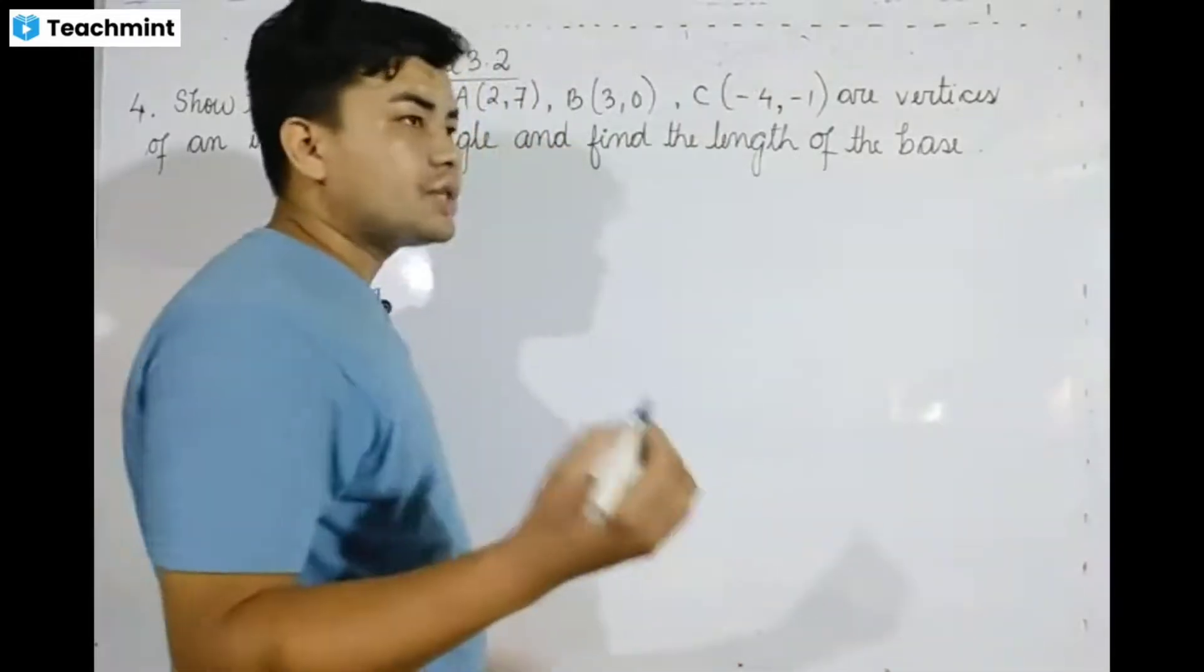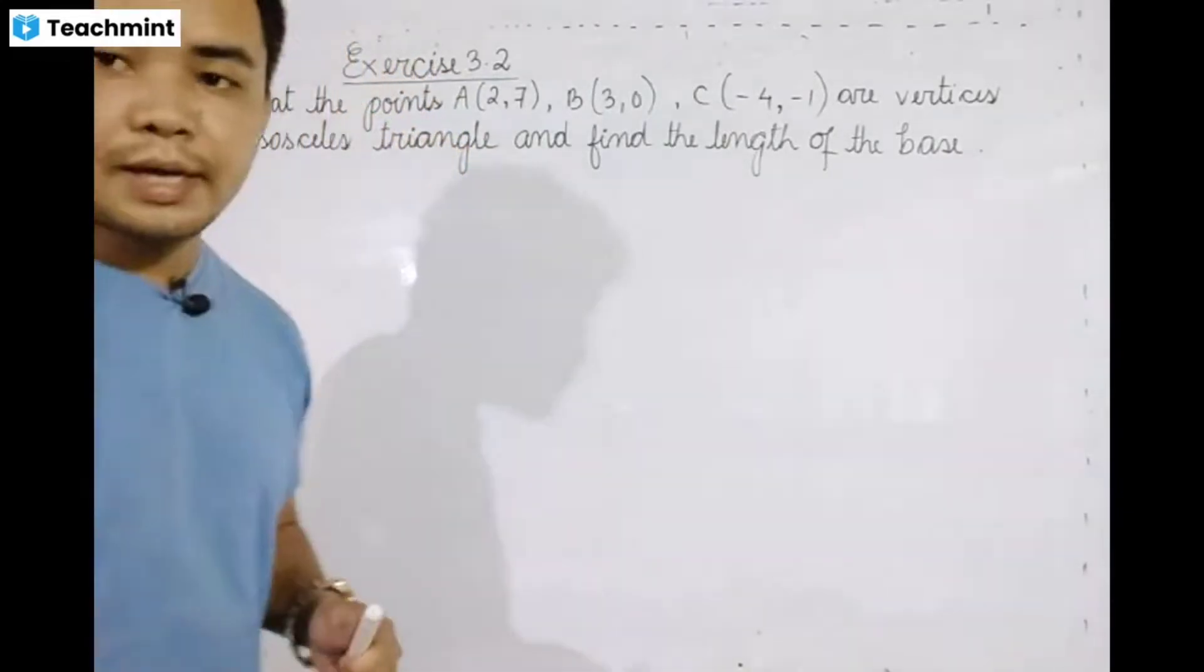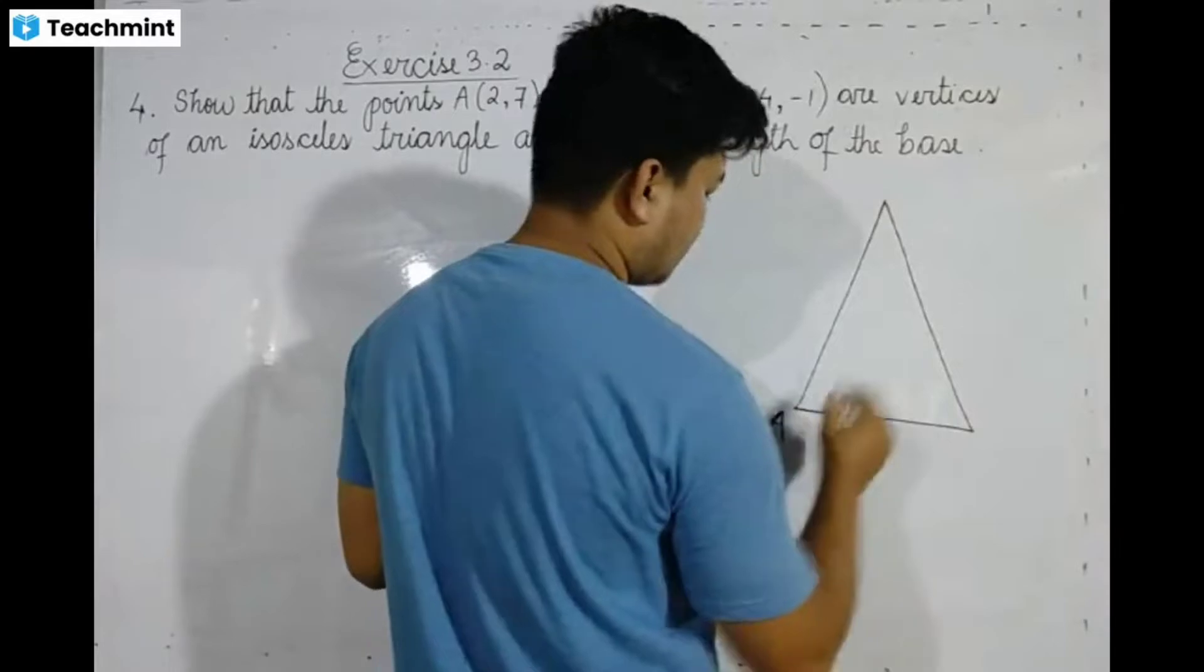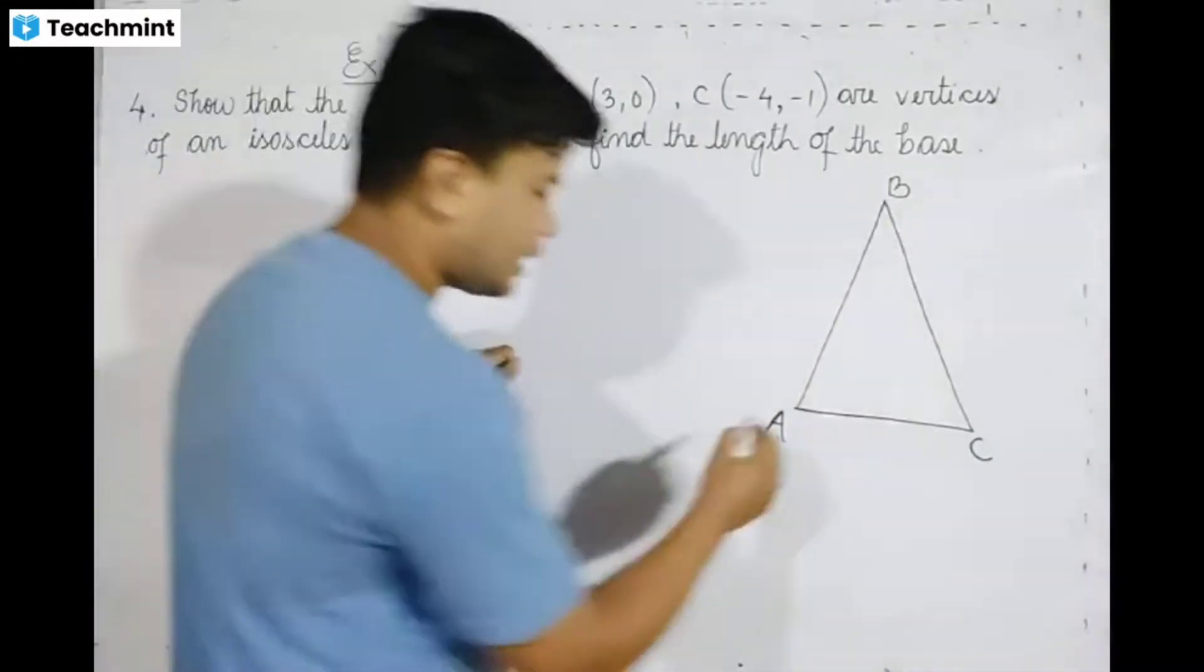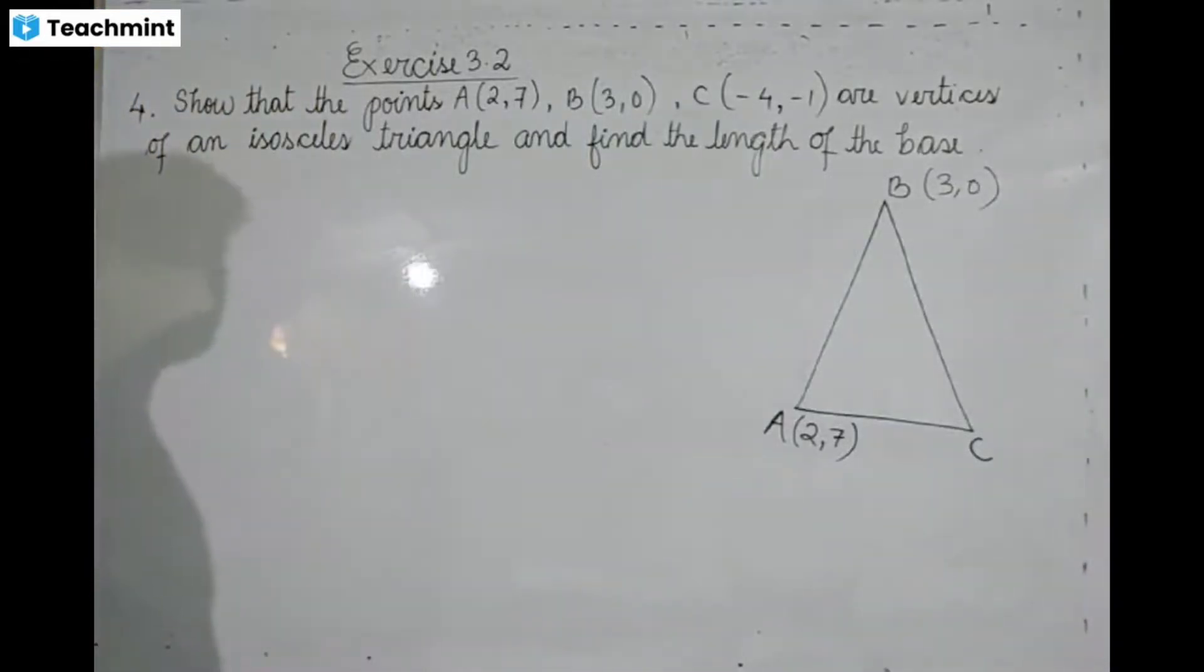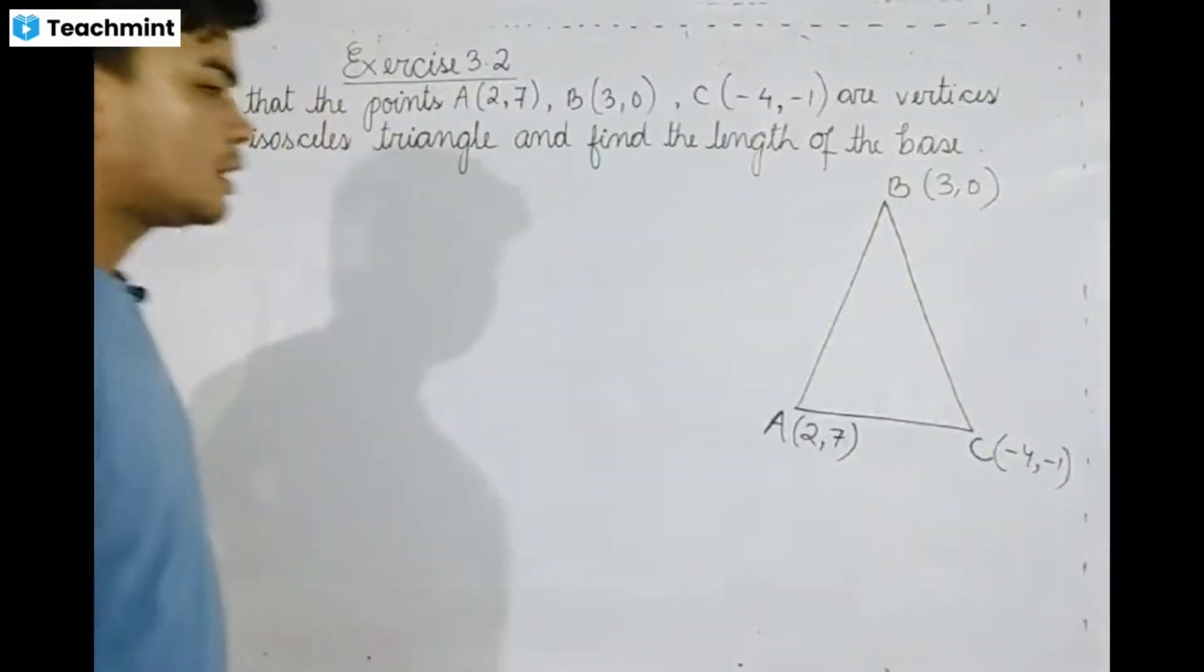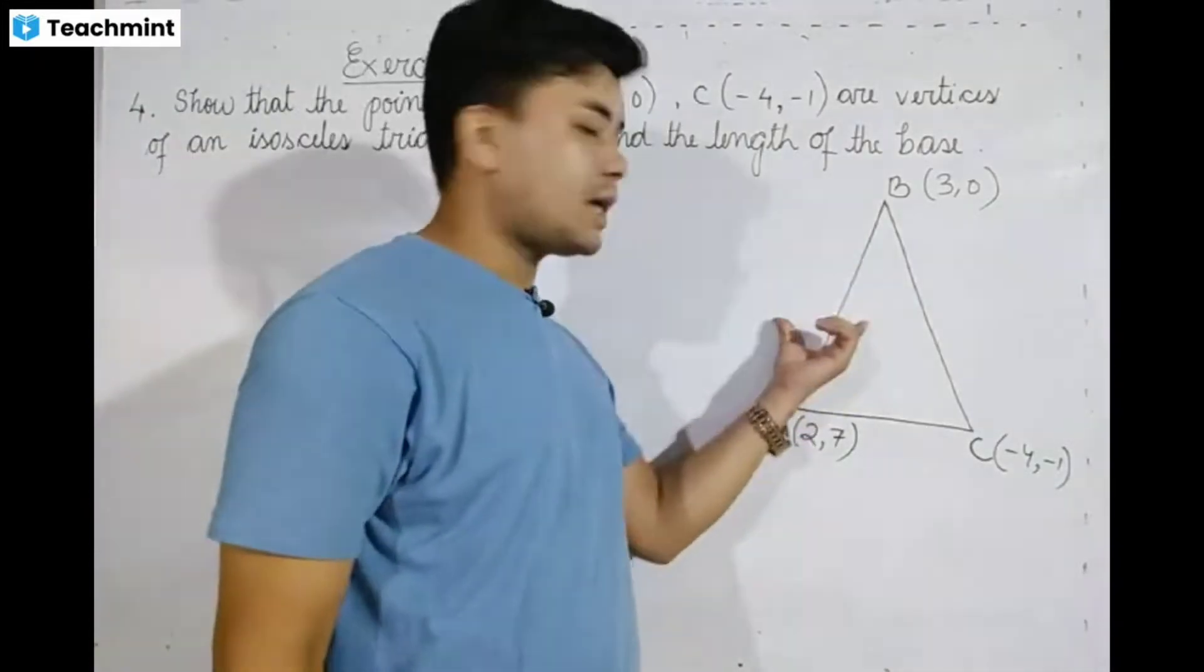For an isosceles triangle, any two sides must be equal. Let me draw this triangle with vertices A, B, and C. The coordinates are: A is (2,7), B is (3,0), and C is (-4,-1).